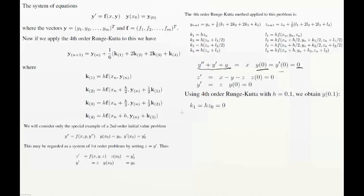So the first thing we'll see is k1. k1 is h times z of 0, which is, of course, equal to 0. So that's easy to see.